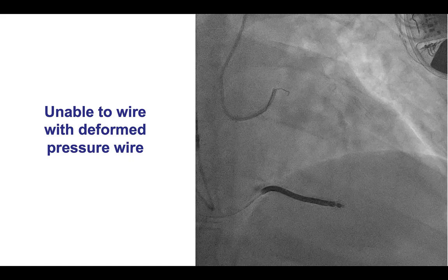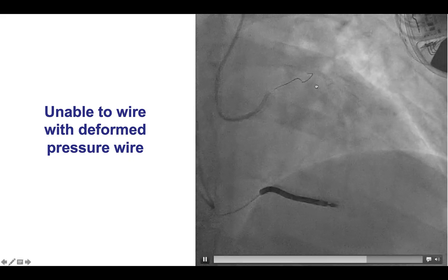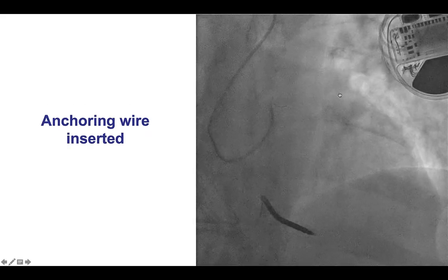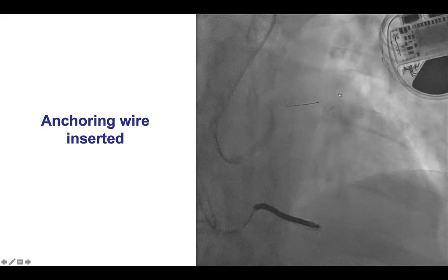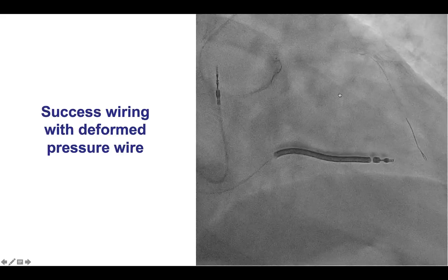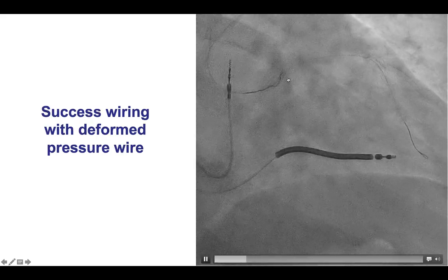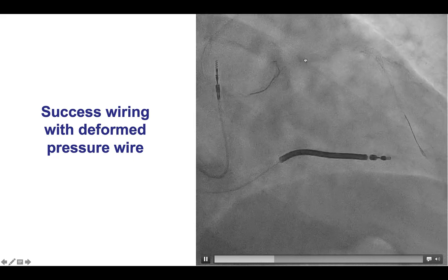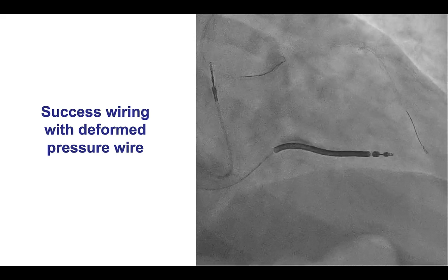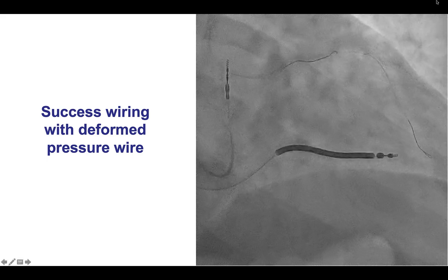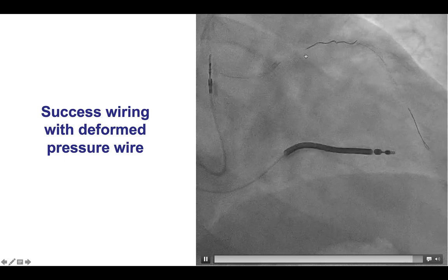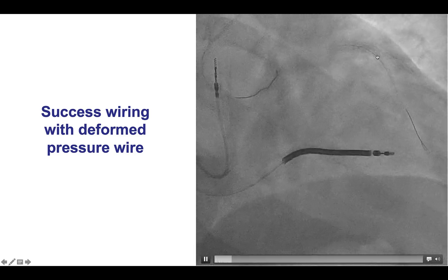This is an example of a pressure wire that was deformed during early attempts to advance through a lesion. The potential solution is to insert an anchoring wire — as done in the previous case — that provides more support to the guide catheter, and then the deformed wire could be advanced. Essentially, tracking the second guide wire across the target lesion is an excellent way to provide cost savings by avoiding opening a second pressure wire. So sometimes, if a wire is deformed but is an expensive wire, using an anchoring body wire can help deliver that wire to the target lesion.